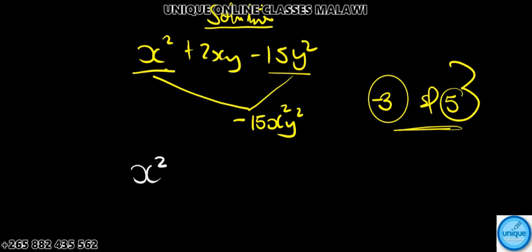So you're gonna have x squared, then minus 3xy, then plus 5xy, minus 15y squared.